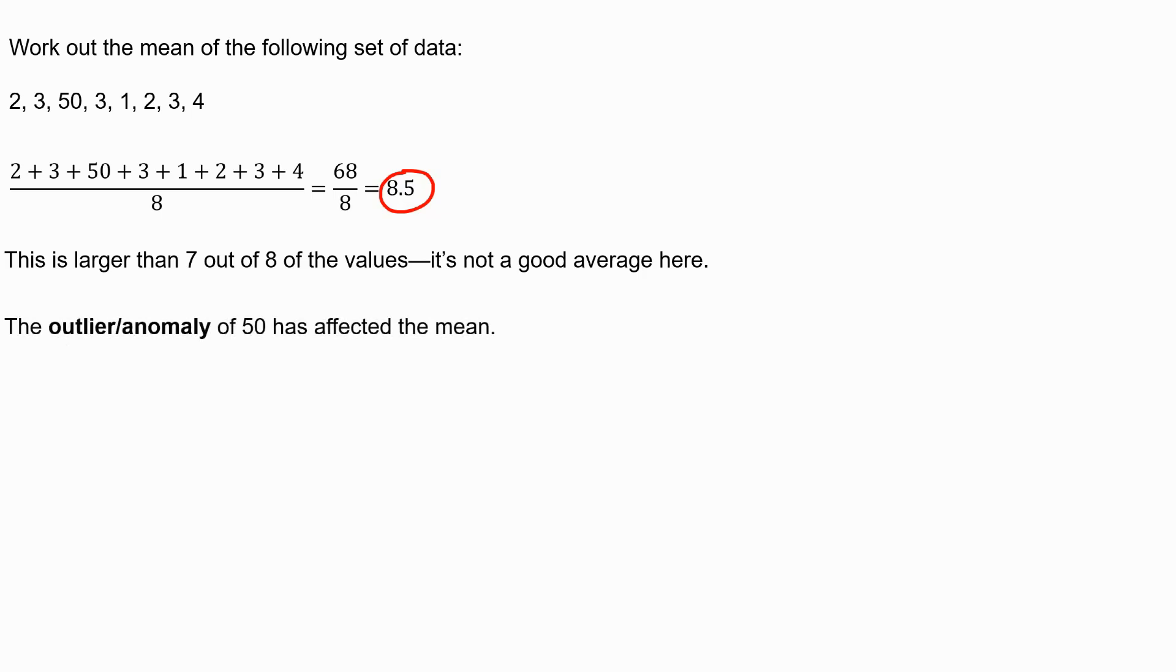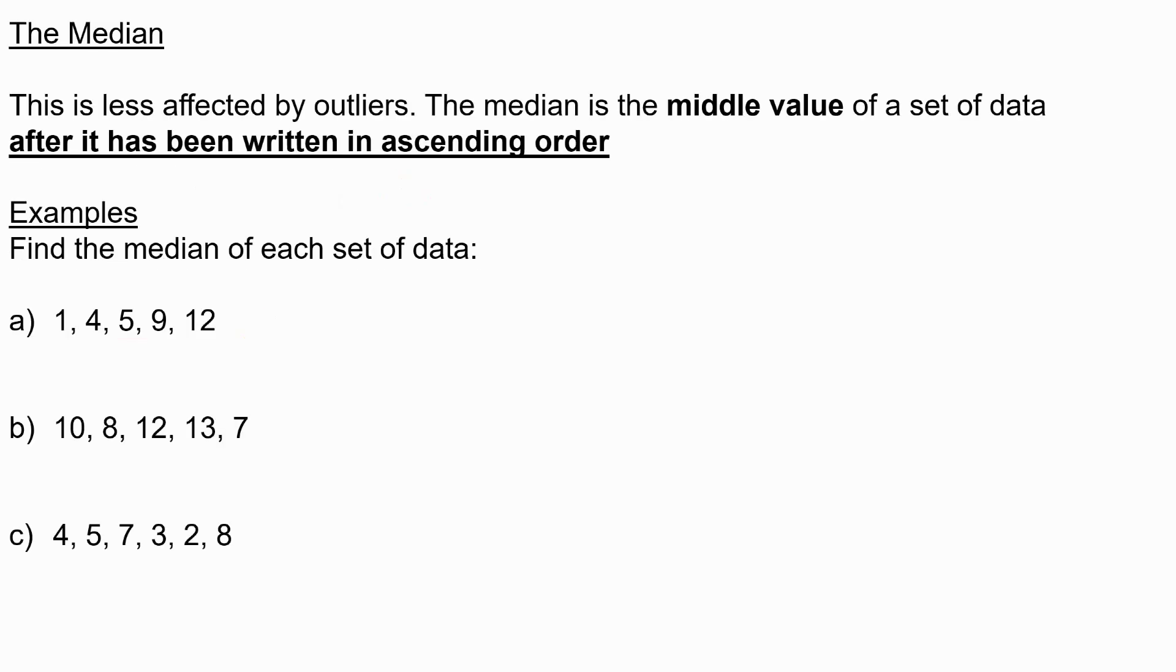We say that the outlier, or anomaly, or extreme value of 50 has affected the mean. And this is quite common. The mean is very heavily affected by outliers. So there's another kind of average that we need as well, which is the median. And this is not as affected by outliers. So when it comes to things like household incomes, the amount of money that a household takes in, we tend to use the median to do that on a national level, because it's so subject to extreme values. There are some people who sadly don't have any money at all or are homeless, and they're going to have a household income of zero. And there are other people at the very opposite end who have a very high household income. And because of these extreme values, we tend to use the median to work that out.